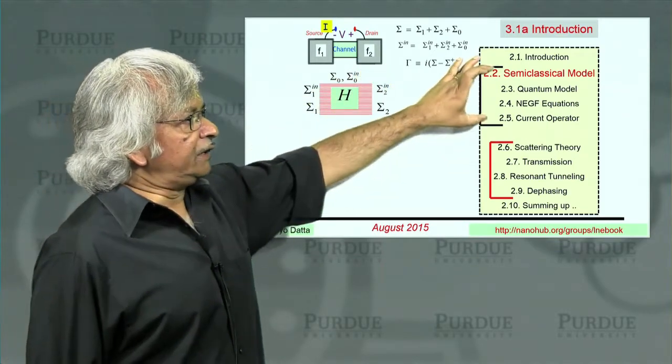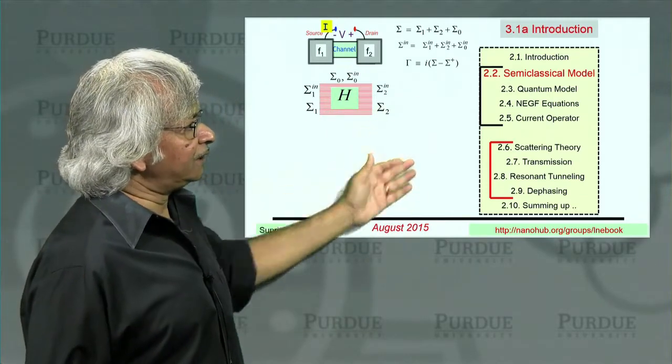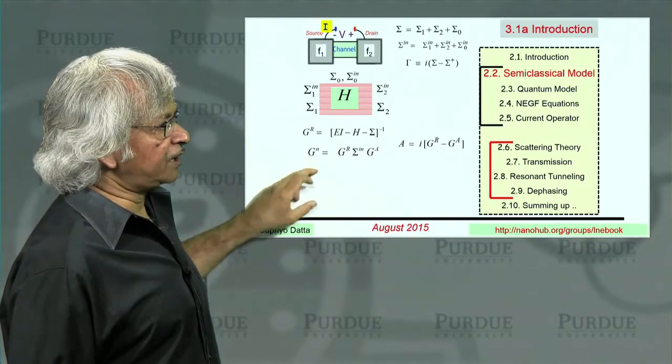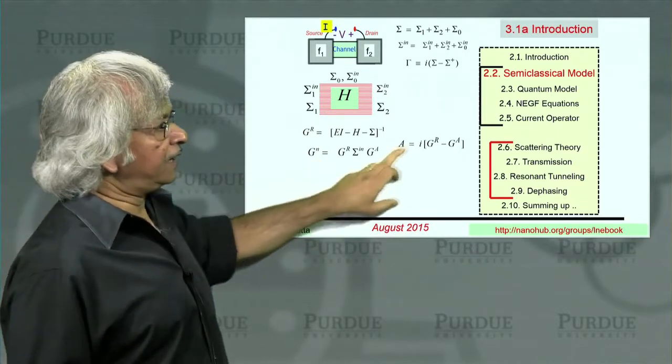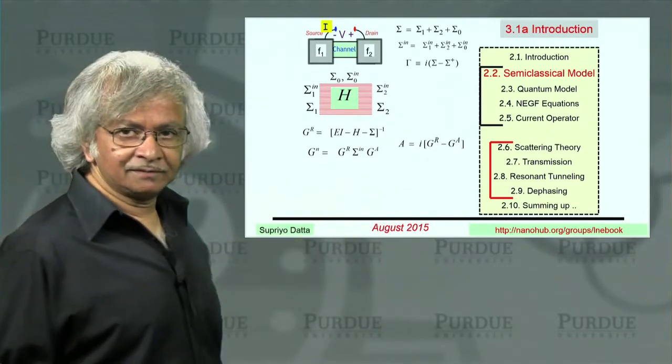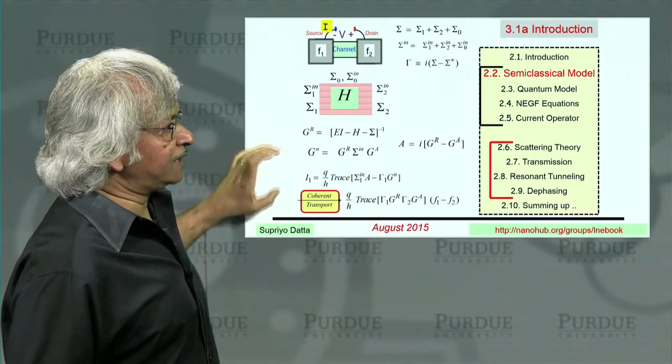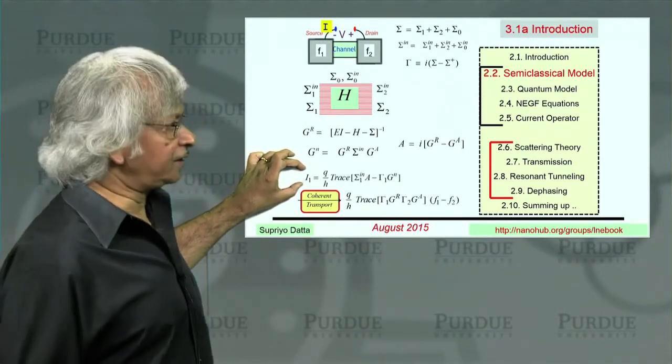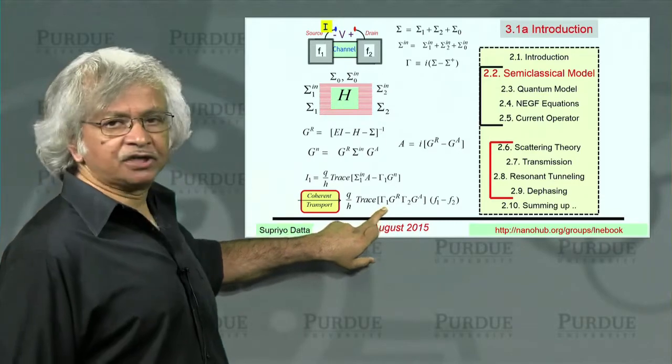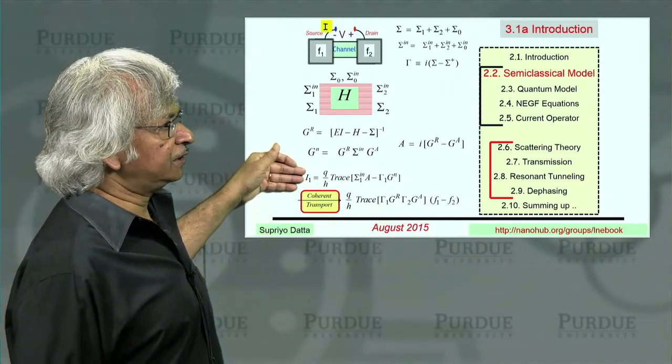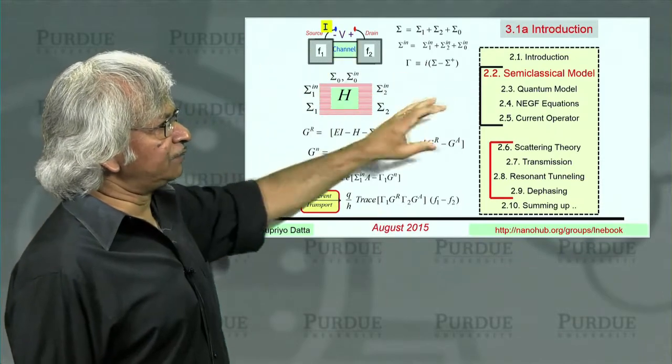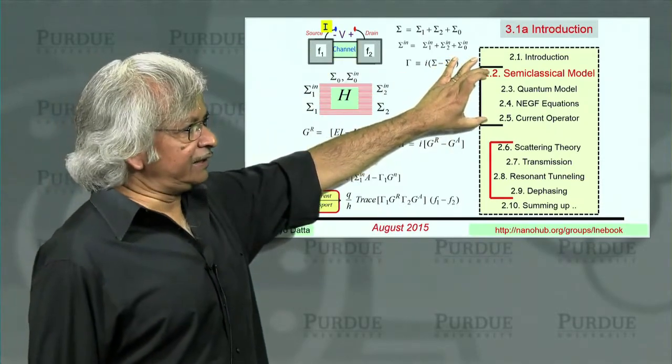So in the first few lectures of Unit 2, we developed the equations of quantum transport. This Green's function, and then this correlation function which is like the electron density, and A called the spectral function which tells you the density of states. These are all matrices. And if you want the current, then you had a separate equation for calculating the current at any contact. And for coherent transport, there was a special version that you could use. But in general, this is the version that you want to use. This is what describes the current at the different contacts. So this is what we developed in the first four lectures in Unit 2.